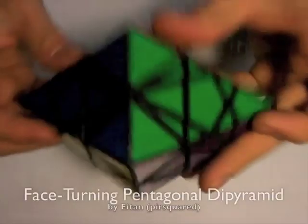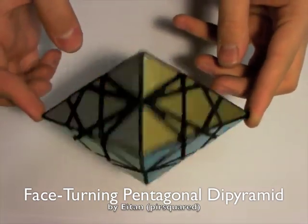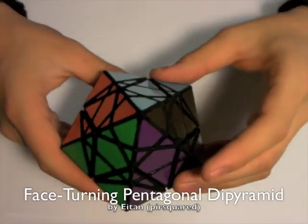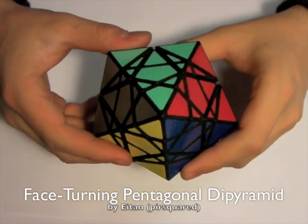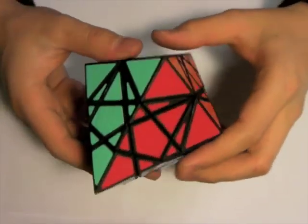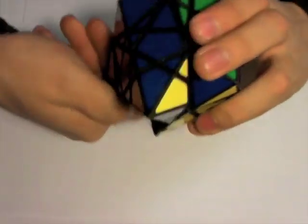Hi, this is Pi R Squared from the Twisty Puzzles Forum, and I'd like to present Face-Turning Pentagonal Dipyramid. This puzzle has ten faces, all of which turn, as the name suggests.